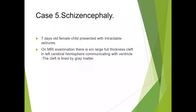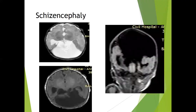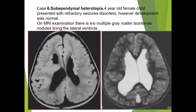The fifth case was of schizencephaly. A seven-day-old female child presented with refractory seizure disorder. The sixth case presented with refractory seizure disorder; however, development was normal. On MR examination, there are multiple gray matter iso-intense nodules lining the lateral ventricle, consistent with periventricular heterotopia.